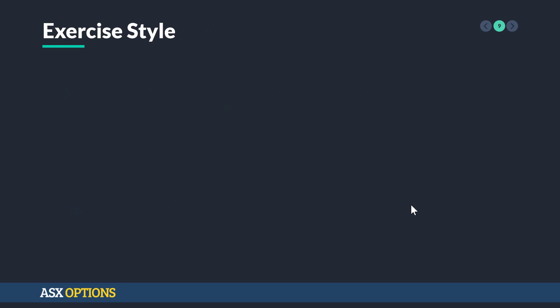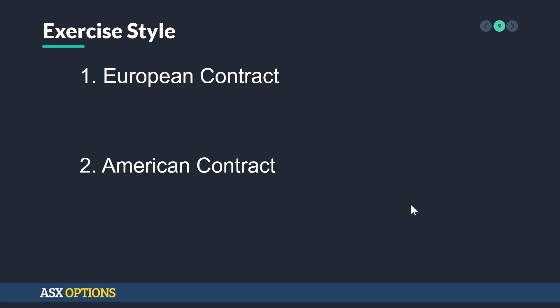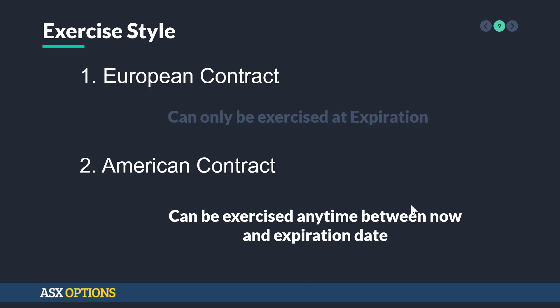Let's move on to exercise style. You would have heard of European contracts and American contracts — and no, this is not about options trading in Europe versus America. These types of contracts are both traded everywhere in the world. A European contract can only be exercised at the expiration date, while an American contract can be exercised any time between now and the expiration date.